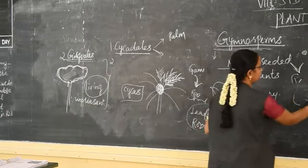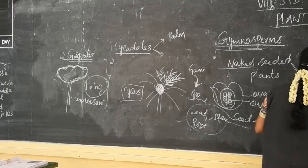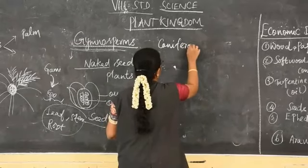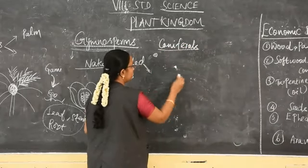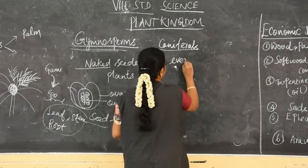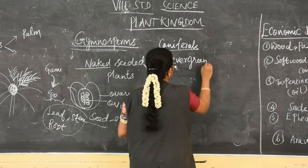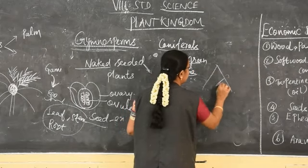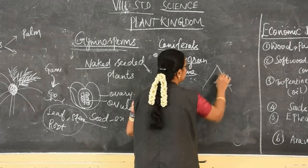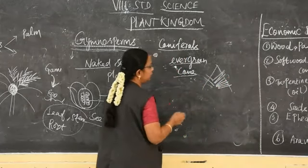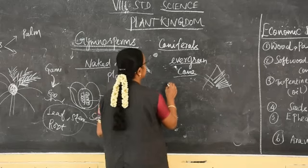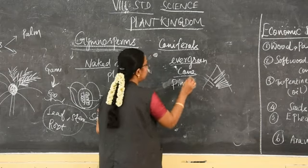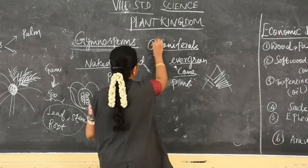Next is Coniferales. Coniferales shows cone-like trees and they are evergreen. They have a cone-shaped appearance, and the leaves are needle-like structures. The example is Pinus.